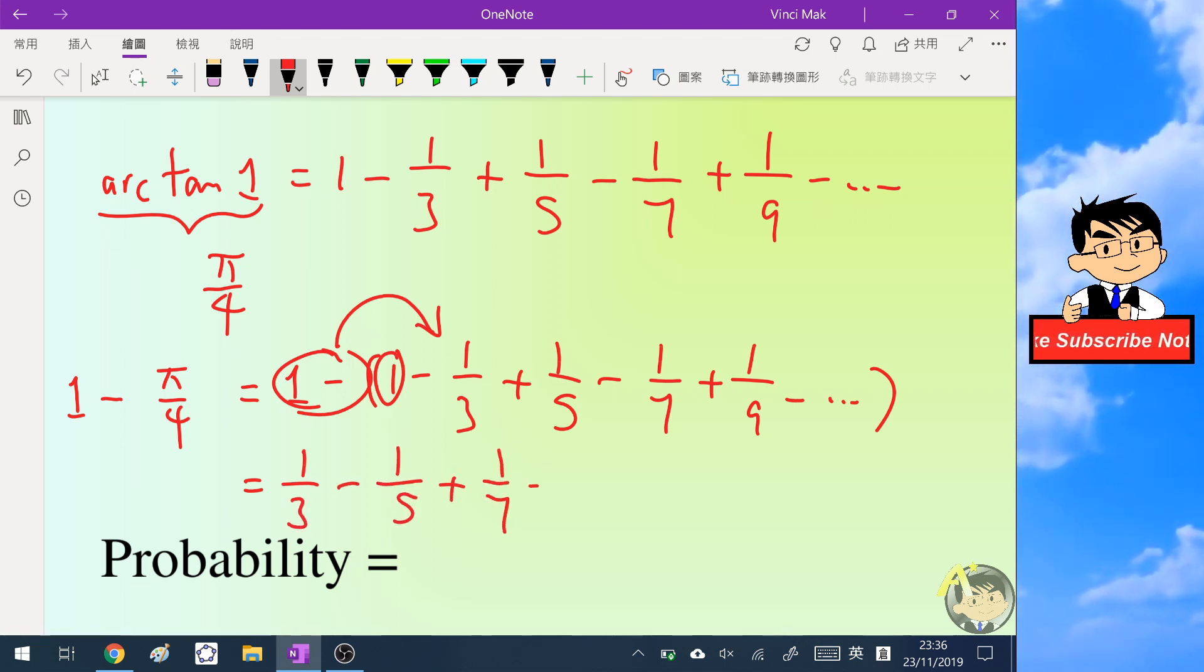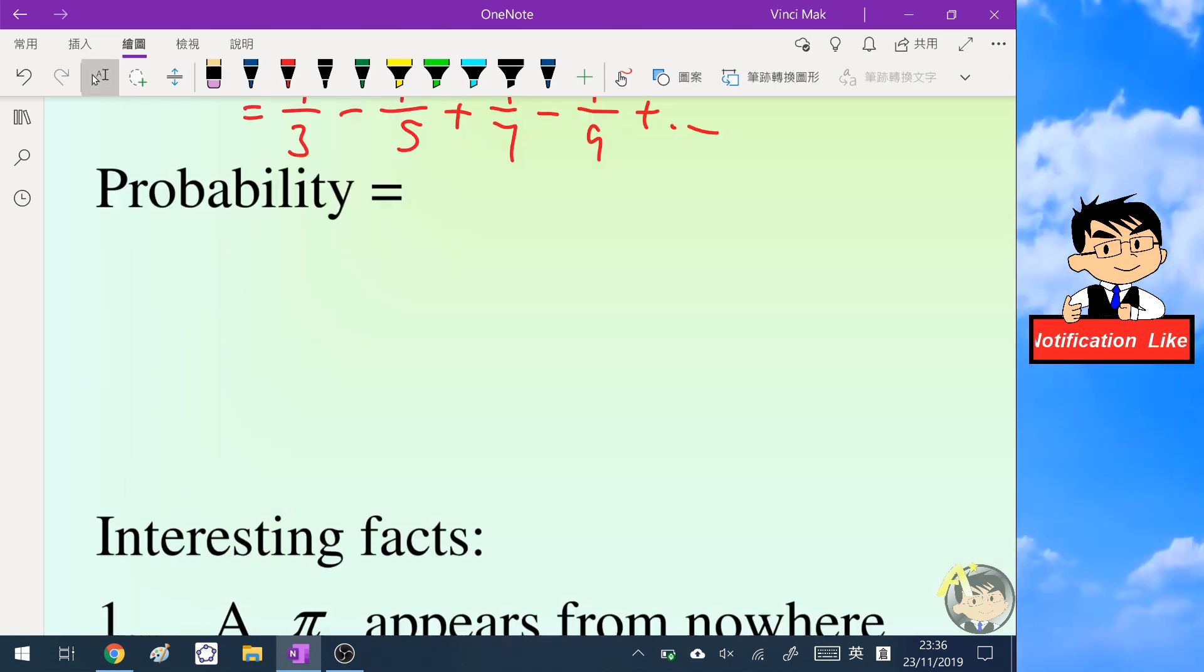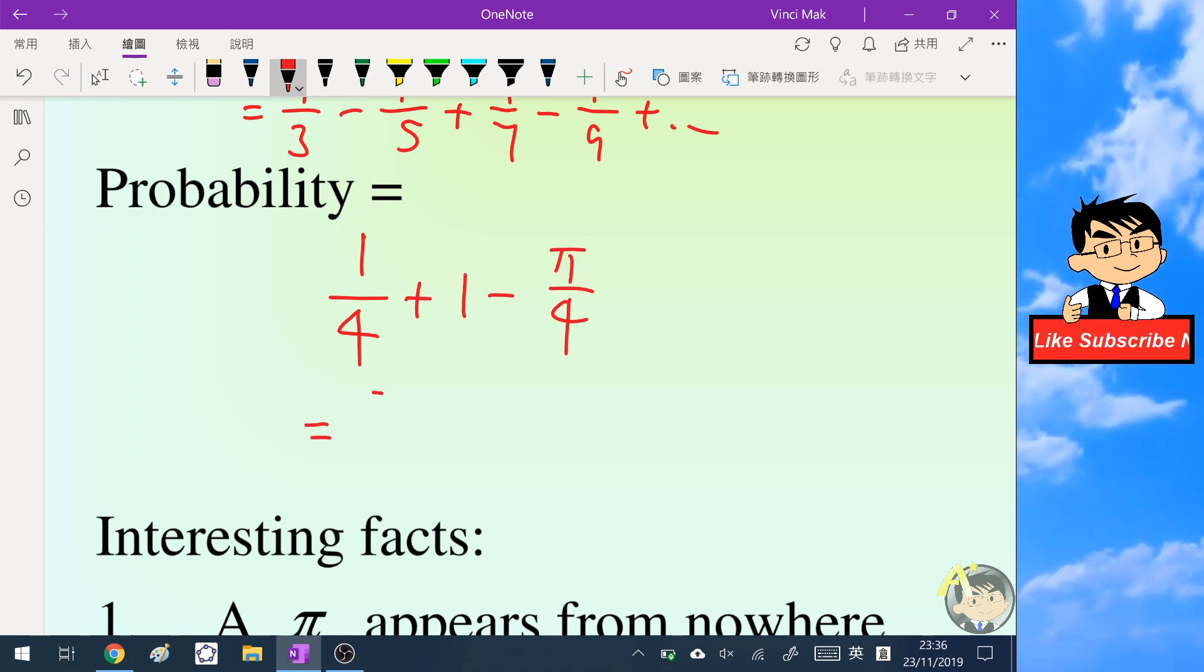So we can simplify the probability, which becomes 1/4 plus 1 - π/4, which is 5/4 - π/4.